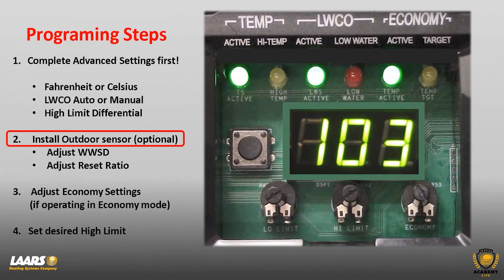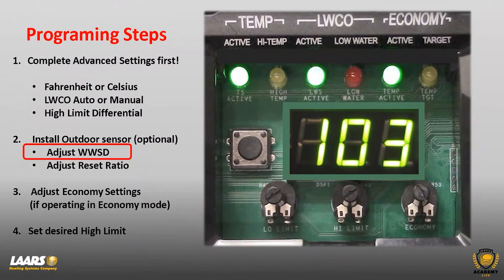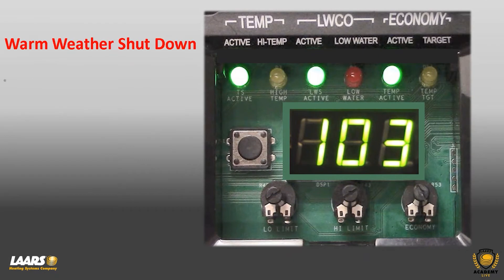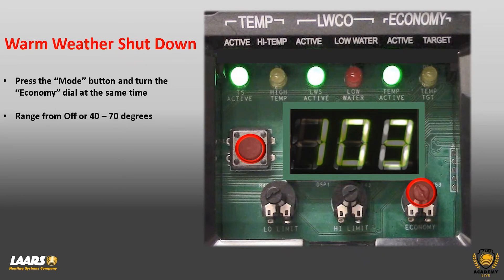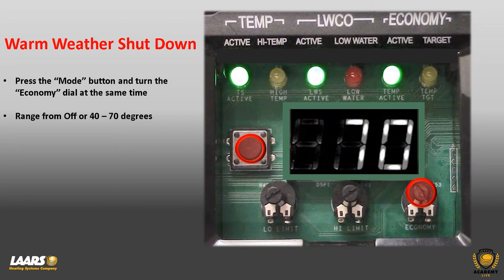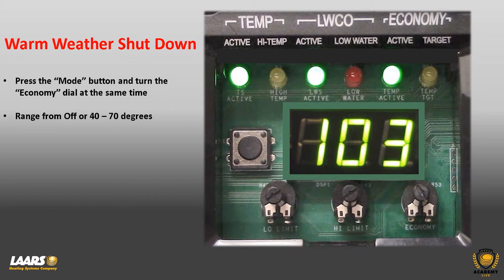Step two: if you chose to install the outdoor sensor, hook it up first. Then you can adjust your warm weather shutdown. Warm weather shutdown is achieved by pressing the mode button and turning the right-hand economy dial simultaneously. The range for warm weather shutdown is from 40 to 70 degrees. In this example, I'm showing a value of 70 degrees, so at anything above 70 degrees the boiler won't operate for heating — though it can still operate for domestic hot water if connected to an indirect.